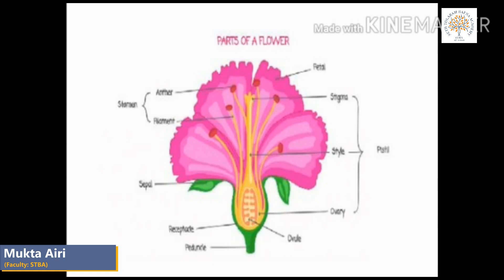First is sepal. Sepals are green in color; they enclose and protect the bud. When the flower opens out, the sepals are found on the outer side of the petals. Second is petal. Petals are usually the brightest and most colorful part of a flower; their function is to attract bees, butterflies, and other insects which help in pollination. Inside the flower, there are stamens, which are the male reproductive part of a flower. The anther at the end of the stamen contains a yellow substance called pollen. In the center of the flower, there is a carpel or pistil, which is the female reproductive organ. Sepals and petals are the vegetative parts of the flower. Some plants such as cauliflower store extra food in their flowers.